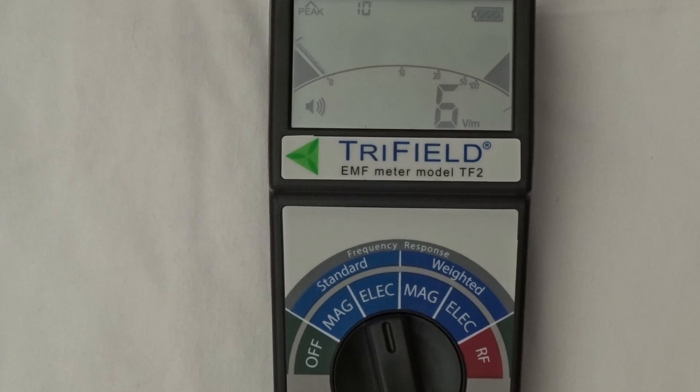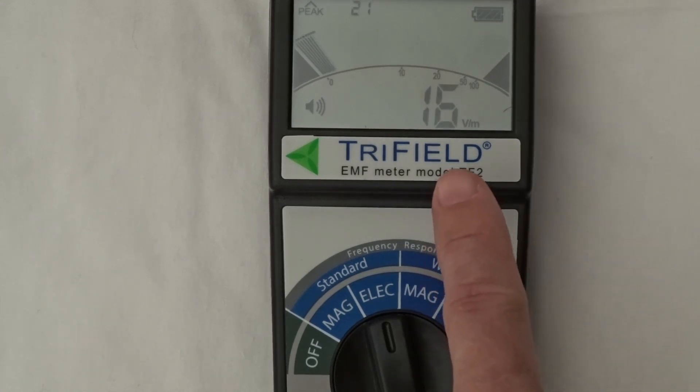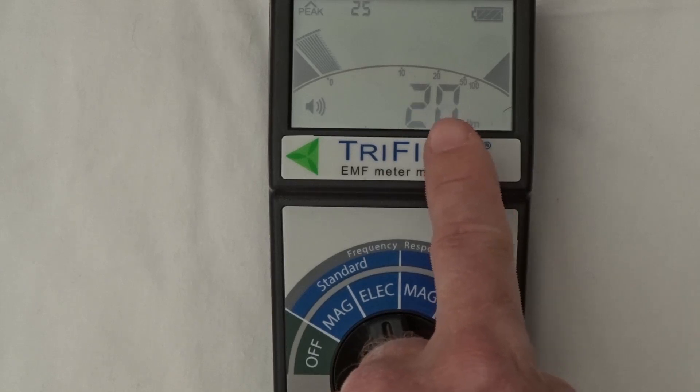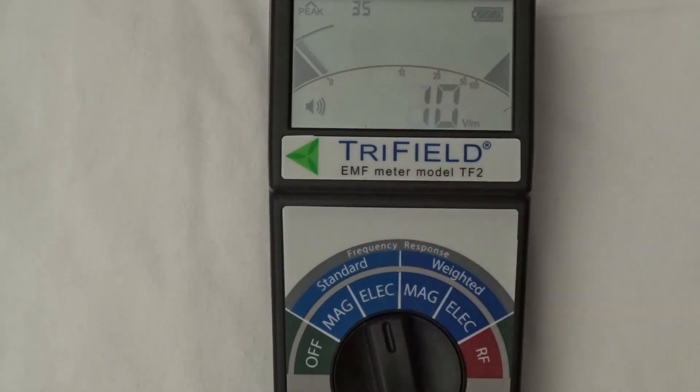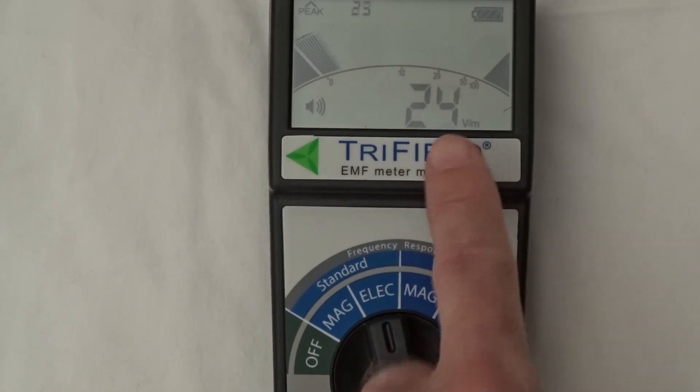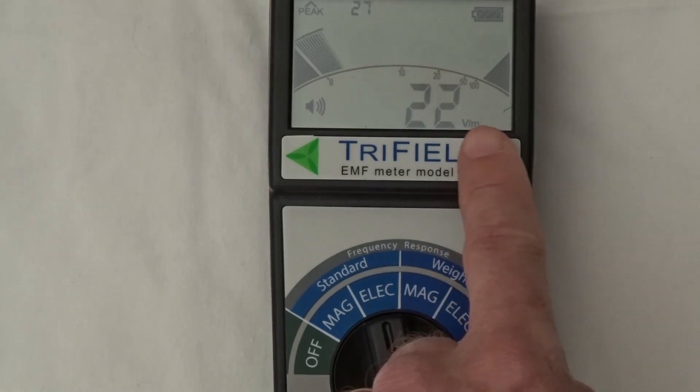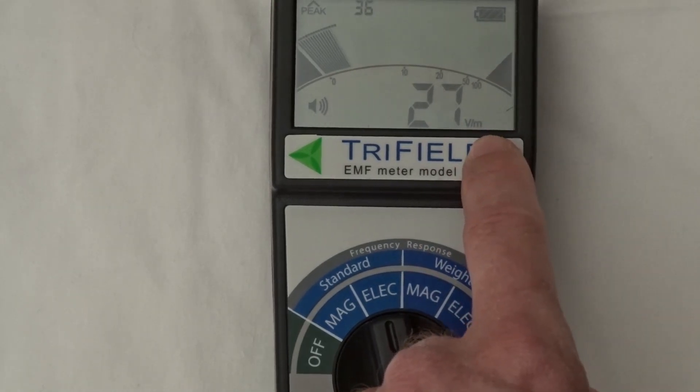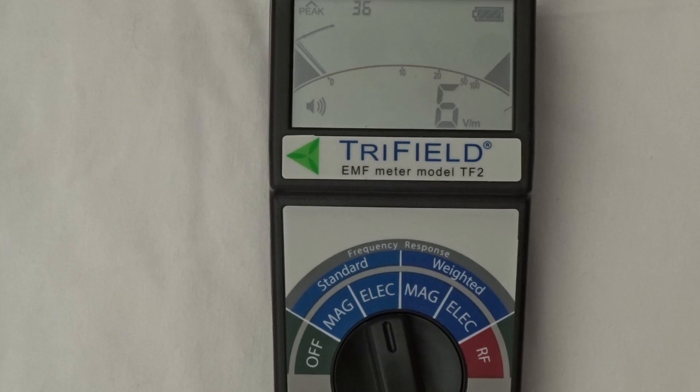And if we move the selector switch to ELEC, so now we're measuring electric fields. The big digits at the bottom now tell us the current field measurement for electric fields. You can see it's actually reacting to my finger. And we have a reading in VM now. VM means volts per meter.